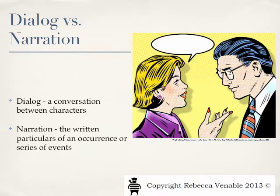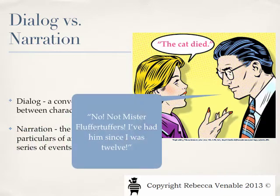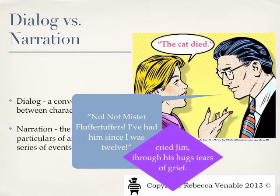Looking at dialogue examples first, Mindy could say, 'The cat died.' And Jim could say, 'No, not Mr. Fluffertuffers! I've had him since I was 12!' Here's our dialogue. But we can add in narration to give us more specifics — 'Cried Jim through his huge tears of grief.' This gives us not only who is speaking, but how they're speaking and how they're reacting.